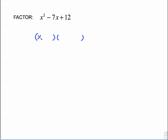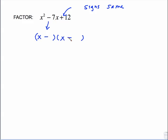Same scenario. x, x in the front. Bring that minus sign down to the first parentheses. Because the last sign is positive, I know the signs are the same. Feel free to write these little notes to yourself on your papers — it'll help you keep the sign rules straight. So the first is minus, and therefore the second has to be minus. What multiplies to give me 12 and adds to give me 7 — since I've already handled the signs in the parentheses, I'm just working with the numbers — that'll be 4 and 3.